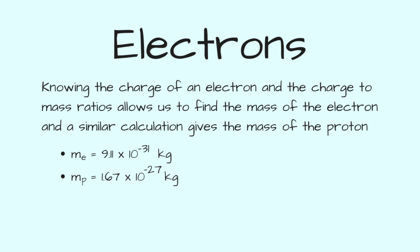Knowing the charge of an electron and the charge-to-mass ratio allows us to find the mass of the electron, and a similar calculation gives the mass of the proton. The mass of the electron is 9.11 times 10 to the minus 31 kilograms, and the mass of a proton is 1.67 times 10 to the minus 27 kilograms. So Thomson and Millikan proved the existence of the electron, which makes up part of the atom. They also showed that the electron was a tiny part of the atom, that electrons are identical to each other, and that they all have the same charge and mass. This is also true for protons.